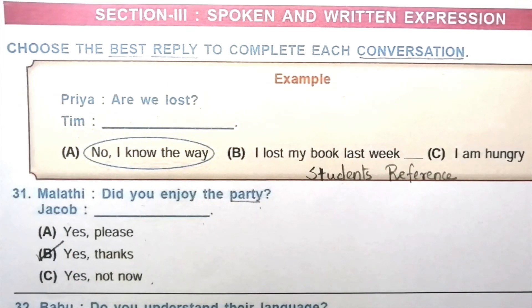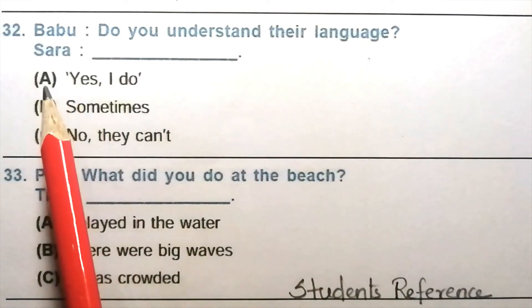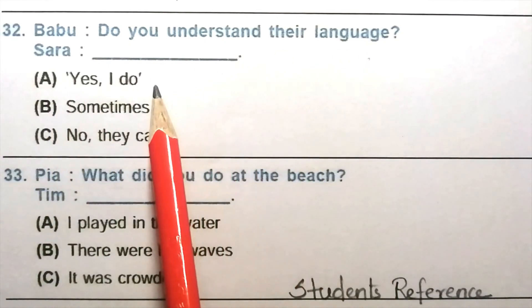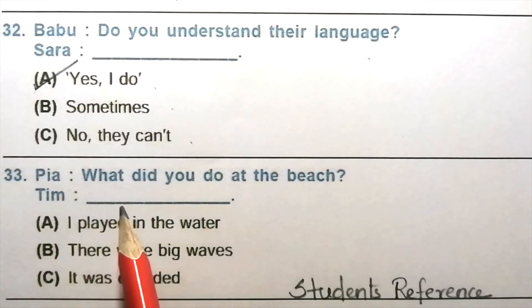Question 32: Babu: Do you understand their language? Sara: blank. Yes I do. Sometimes. No they can't. The answer is A, yes I do. Question 33: Pia: What did you do at the beach? Tim: blank. I played in the water. There were big waves. It was crowded. The answer is A, I played in the water.